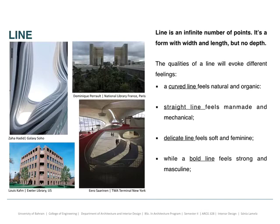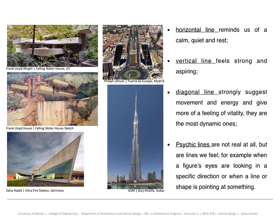A line is made up of several points — an infinite number of points — and it's a form that has width and length but no depth. The quality of the line can evoke different feelings. A curved line feels natural and organic. A straight line could feel man-made and mechanical. A delicate line feels soft and feminine, while a bold line feels strong and masculine. Horizontal lines remind us of calmness, quietness, and something peaceful. A vertical line makes us aspire and feel strong. Diagonal lines suggest movement and vitality. Psychic lines are not real lines but they implement a feeling — like pointing to something even if it's far away from where we are standing.